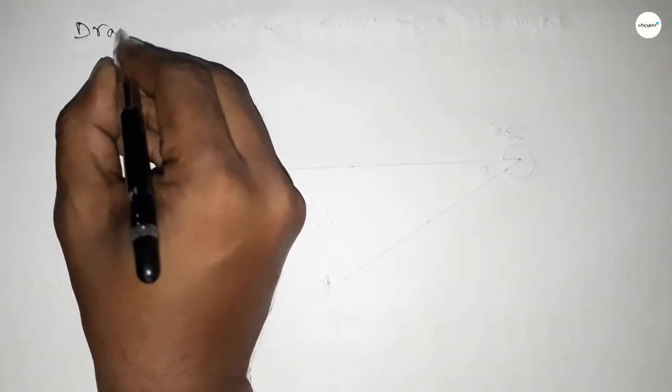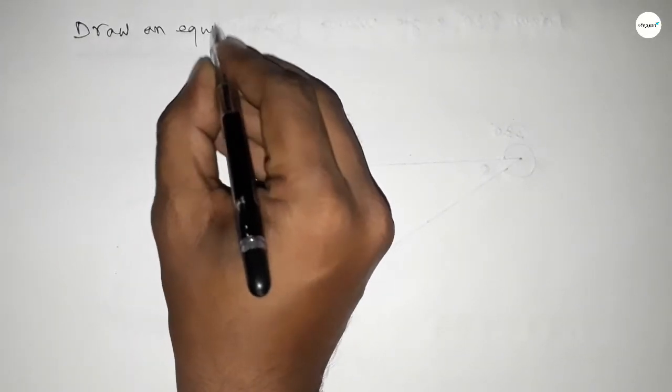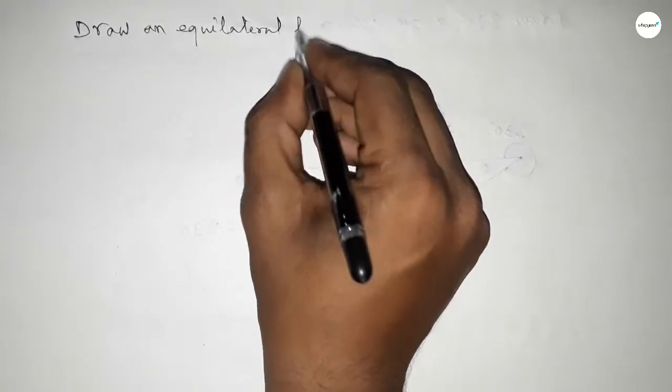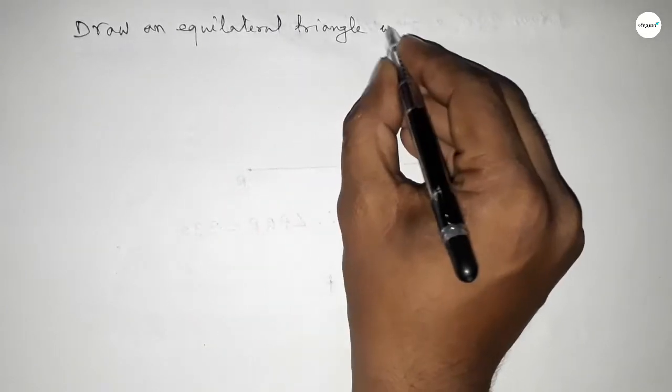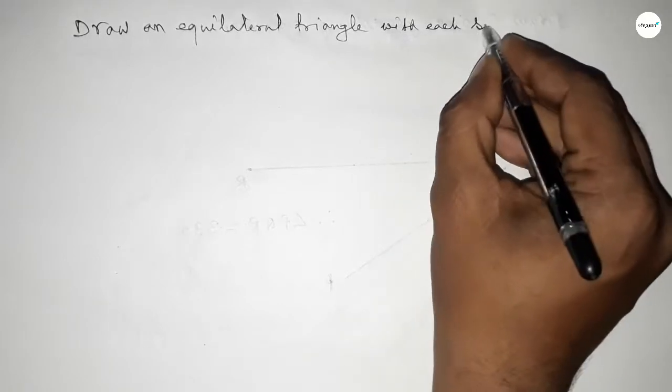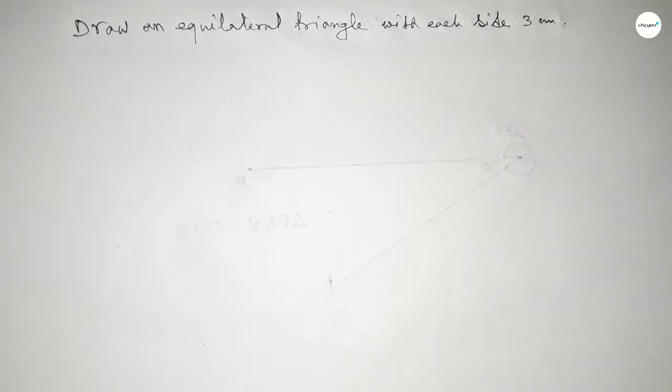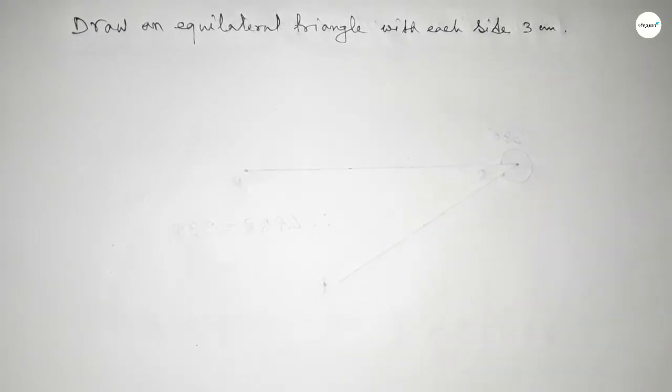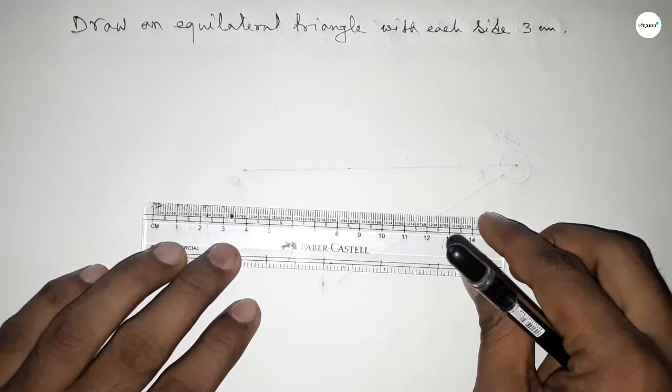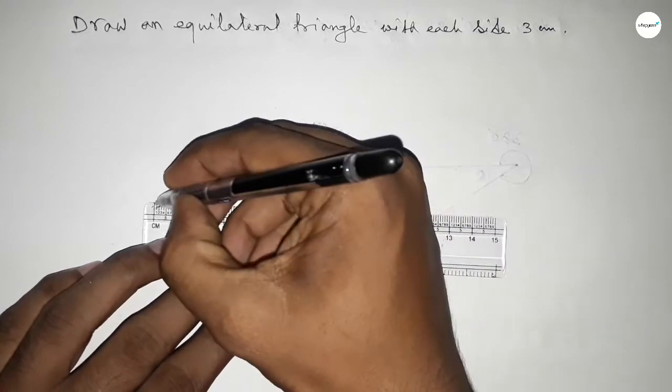Hi everyone, welcome to SSR classes. Today in this video we have to draw an equilateral triangle with each side 3 centimeter. So let's construct an equilateral triangle. Let's start the video. First of all we have to draw 3 centimeter.